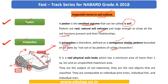One more important data point: polypedon is a real physical soil body which has a minimum area of more than one square kilometer. Based on these polypedons we can actually classify soils — referring to various characteristics such as texture and what kind of plants can be grown there. All such classification can be done based on polypedons.